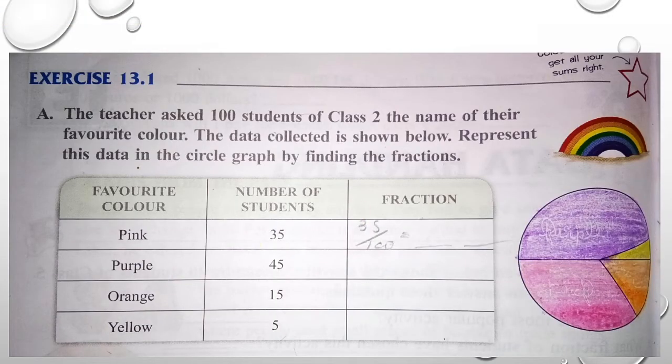Here is your first exercise, 13.1. We already know what is data handling, we have to separate some data in separate columns. Here, question A: the teacher asked 100 students of class 2 the name of their favorite color. The data collected is shown below, represent this data in the circle graph by finding the fractions.